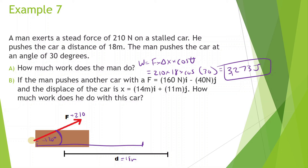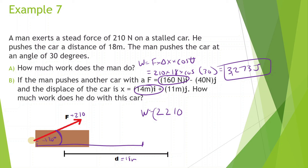If the man pushed another car with a force of 160 newtons in the x-direction and 40 newtons in the negative y-direction, and the displacement is 14 meters in the x-direction and 11 meters in the y-direction, how much work does he do? Since the x-force and x-displacement are in the same direction, the angle is 0, so cosine of 0 is 1. Work in the x-direction is 160 times 14, which equals 2,240 joules.